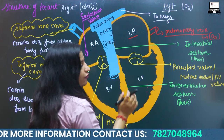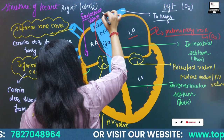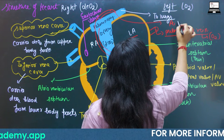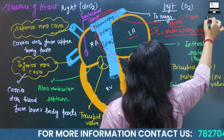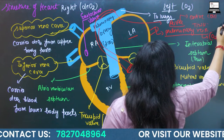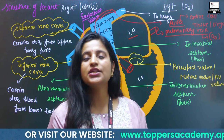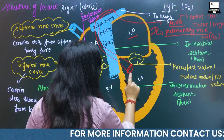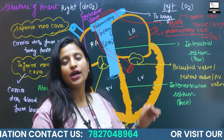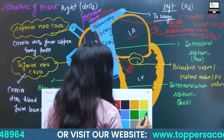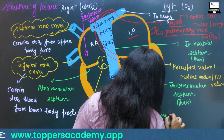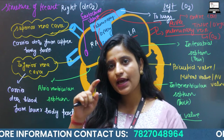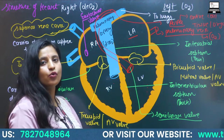The pulmonary vein is also an exception because it carries oxygenated blood, whereas all other veins carry deoxygenated blood. Blood comes into the left atrium, which passes it into the left ventricle. The left ventricle opens into the aorta, which supplies oxygenated blood to the entire body — all tissues and organs. The pulmonary artery and aorta both have semilunar valves to prevent backflow. 'Semi' means half and 'lunar' comes from the moon — these valves are half-moon shaped.